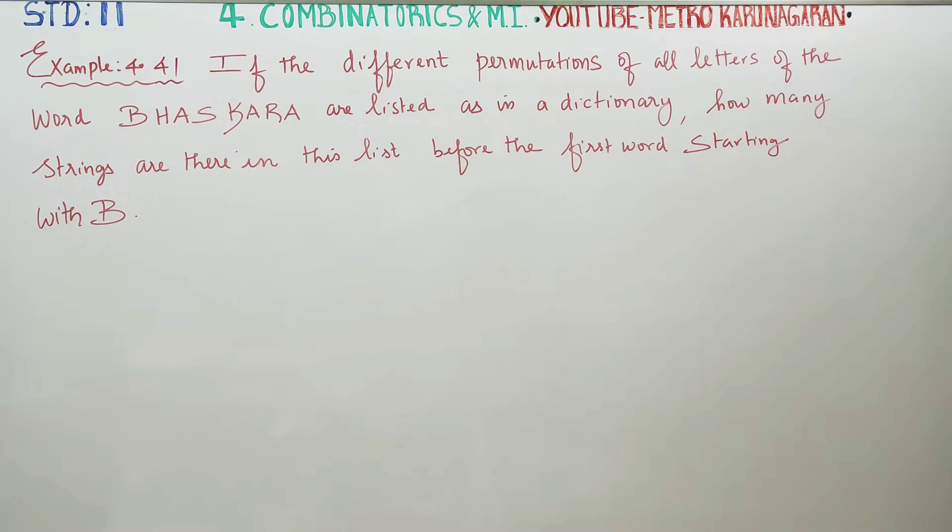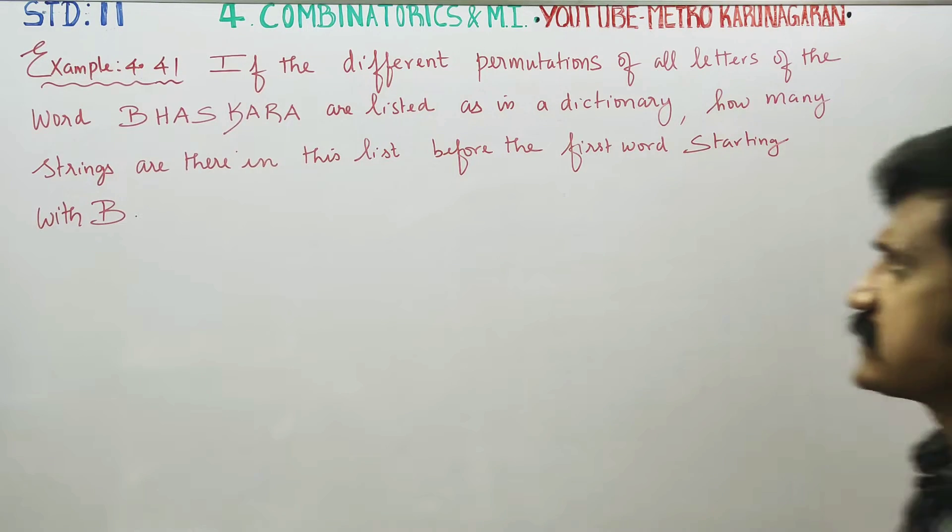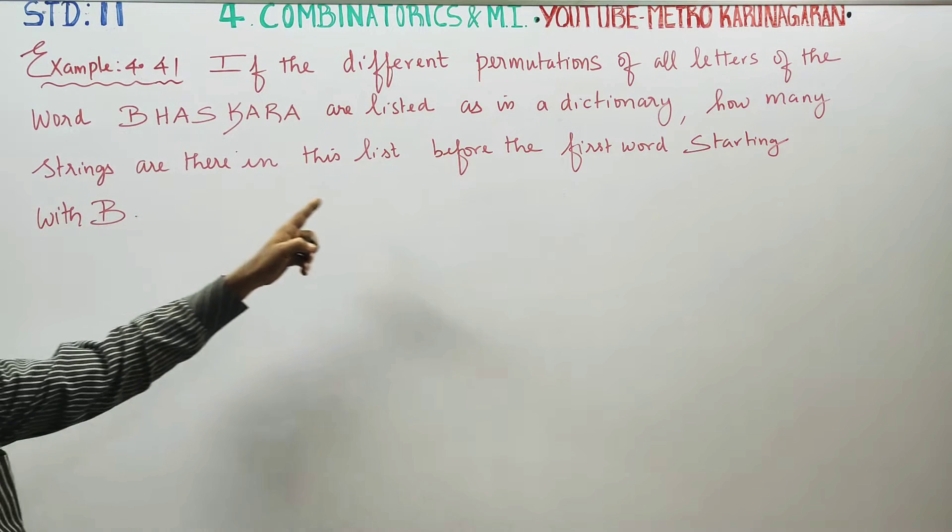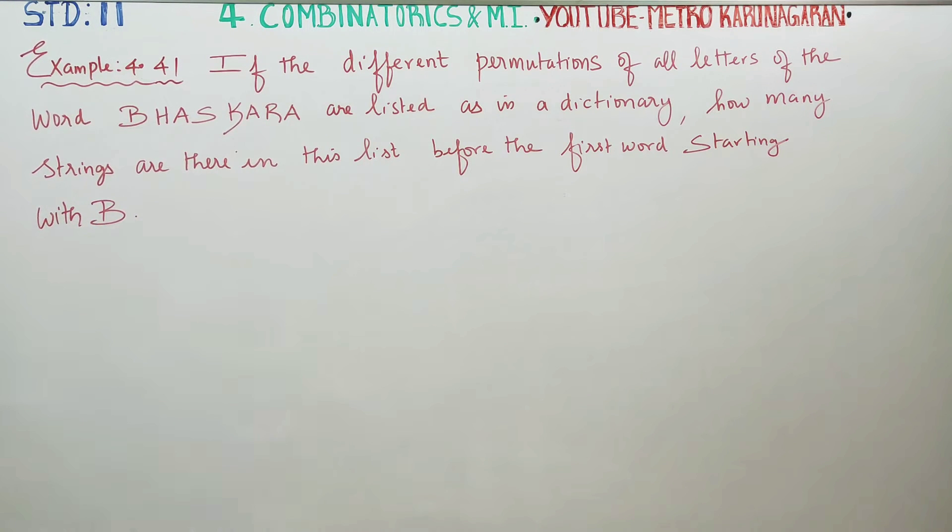Dear 11th Standard Students, in Example 4.41, if the different permutations of all the letters of the word Bhaskara are listed as in a dictionary, how many strings are there in this list before the first word starting with B?